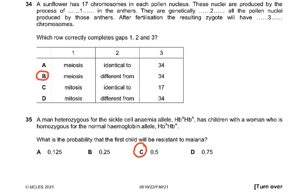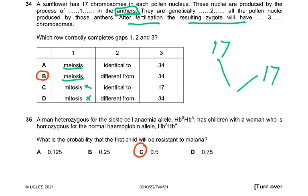Question 34: a sunflower has 17 chromosomes in each pollen nucleus. These nuclei are produced by meiosis in the anthers, because anthers are where male gametes are formed and meiosis must occur there. Mitosis cannot produce gametes. The pollen carries 17 chromosomes, and after fertilization, the resulting zygote will have 34 chromosomes (17 from the male gamete plus 17 from the female gamete).